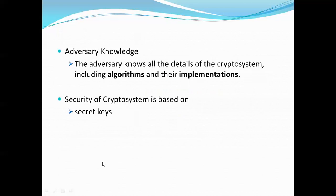We assume that the adversary has all the details of the cryptosystem, including the algorithm and its implementation. For example, algorithms such as DES and AES are publicly known — the adversary knows these algorithms exist and understands their encryption and decryption steps. The security of the cryptosystem entirely depends on the secret keys, which are known only to the sender and receiver.